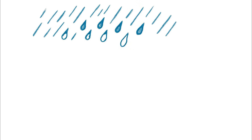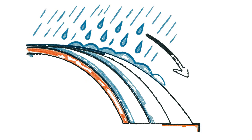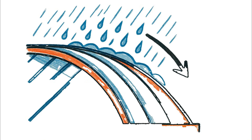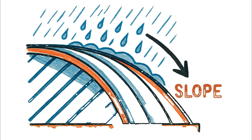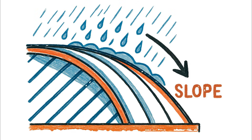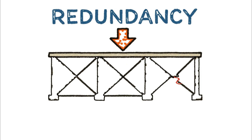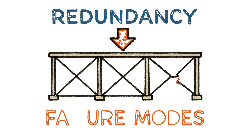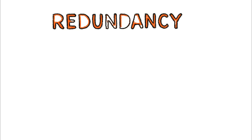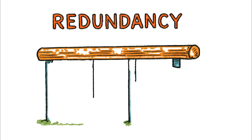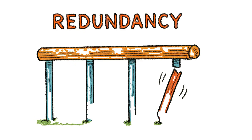The slope of those ribs is equally critical, engineered not just for space but to shed the immense weight of rainwater or melting snow, preventing the load from becoming catastrophic. This leads to more advanced engineering considerations in the field: redundancy and failure modes. Redundancy is the principle that the failure of a single component shouldn't cause the collapse of the entire system.